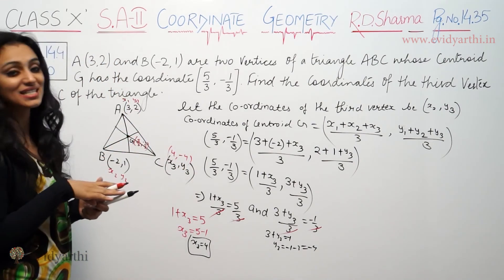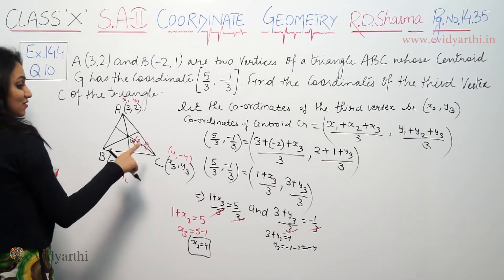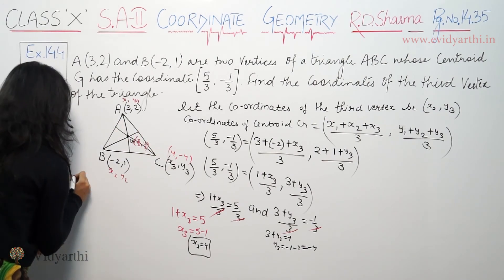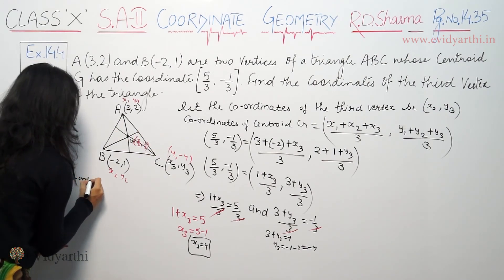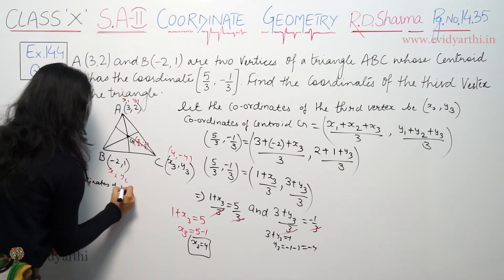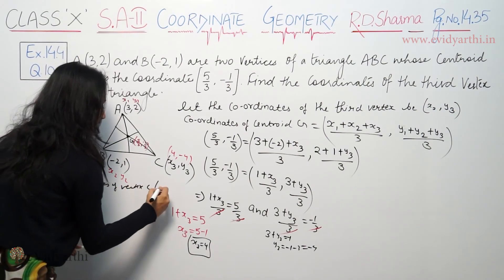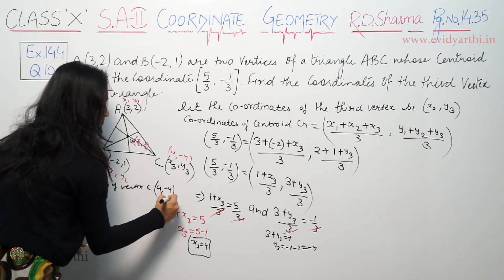So the third vertex coordinates are 4 and minus 4. Coordinates of vertex C: (4, -4).